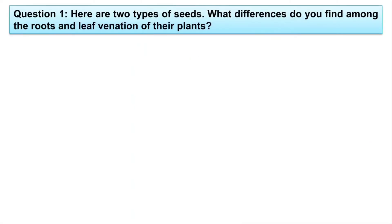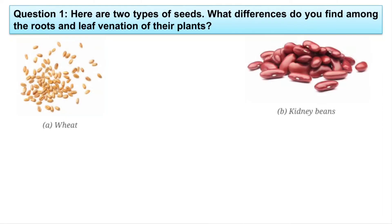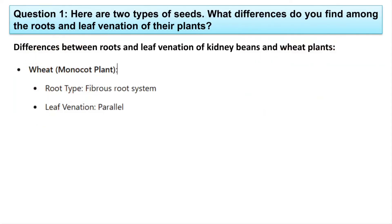Your first question: here are two types of seeds. What differences do you find among the roots and leaf venation of their plants? Here two types of seeds are given — one is wheat and another is kidney beans. We have to give the answer about the roots and their leaf venation. Let us see the answer.